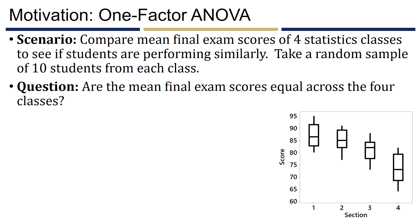Let's take a look at what a one-factor ANOVA problem might look like. Suppose we're comparing the mean final exam scores of four statistics classes to see if the students are performing similarly across the board. We'll number these sections 1, 2, 3, and 4. We'll take a random sample of 10 students from each class, and our goal is to determine if the mean final exam scores are equal across the four classes.